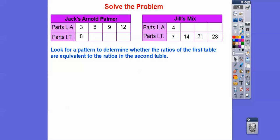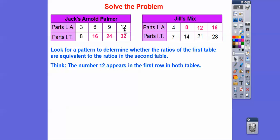We're going to look for patterns to determine whether the ratios of the first table are equivalent to the ratios of the second table. Here's Jack's ratio, three to eight. Notice this goes plus three: six, plus three is nine, nine plus three is 12. For the iced tea: eight plus eight is 16, 16 plus eight is 24, 24 plus eight is 32. Over here, Jill is four to seven. Seven plus seven is 14, 14 plus seven is 21, 21 plus seven is 28. And for lemonade: four plus four is eight, eight plus four is 12, 12 plus four is 16. They both have the number 12 in the first row — here's 12, and here's 12 right here.